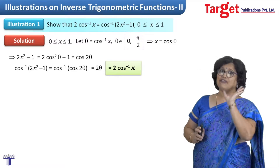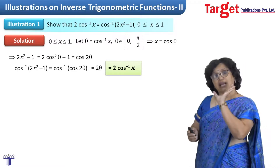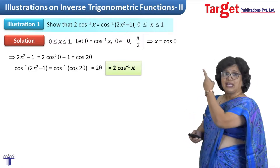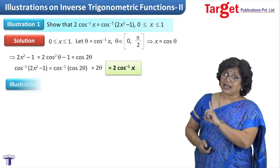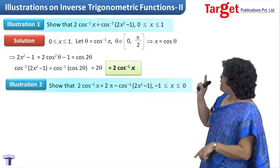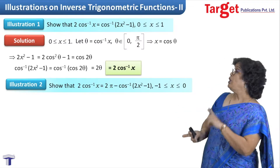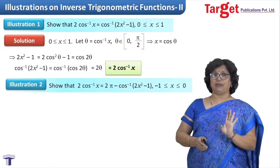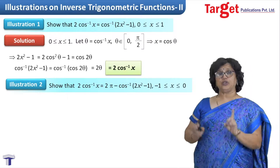We started from the right hand side and arrived at an expression equal to the left hand side, so the proof is complete. You can remember this as a formula with its condition. Moving to the next one: we have to show 2cos⁻¹x = 2π - cos⁻¹(2x²-1), when x lies between -1 and 0 inclusive.